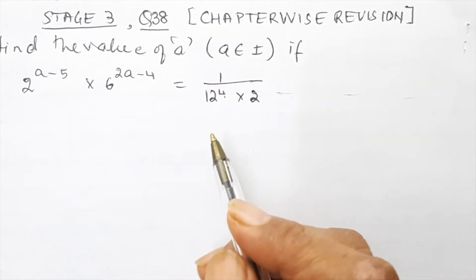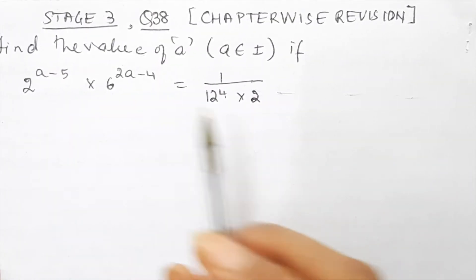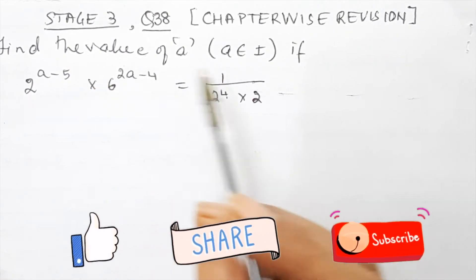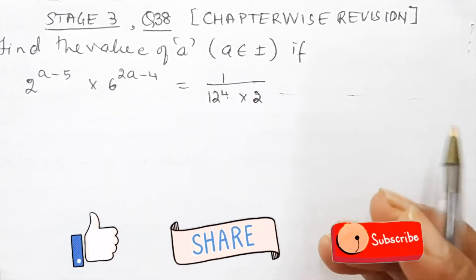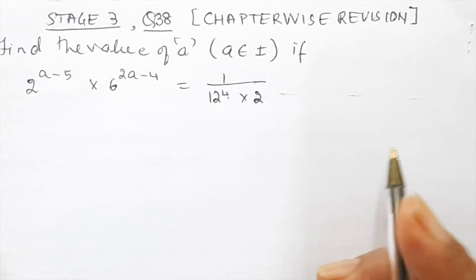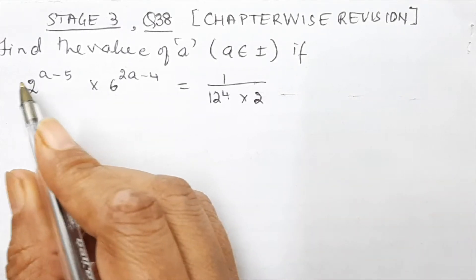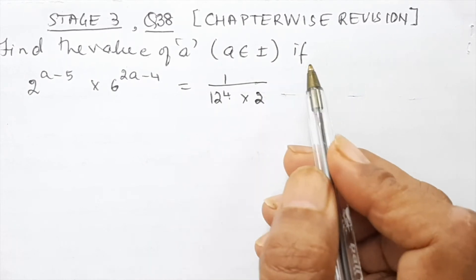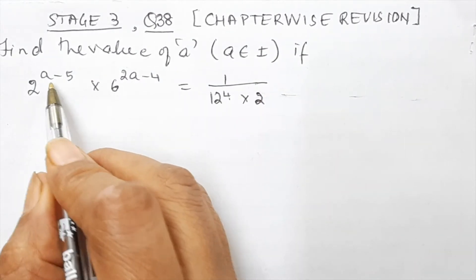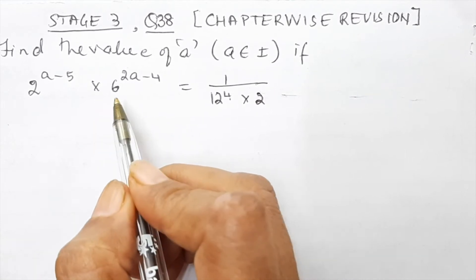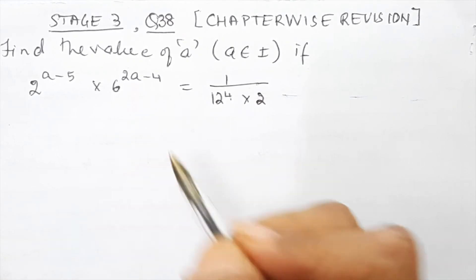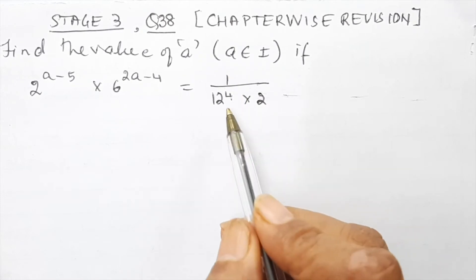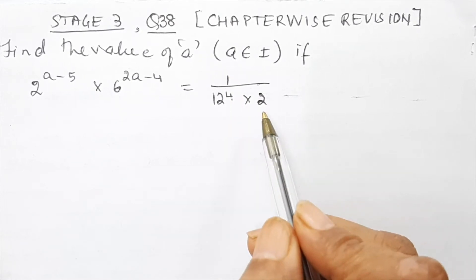Hi, my class 9 friends. This is a doubt from Chapter Wise Revision, Stage 3, question 38 of the Concise Maths Preboards textbook for class 9. Find the value of a, where a belongs to integers, if 2 to the power (a minus 5) into 6 to the power (2a minus 4) equals 1 upon 12 to the power 4 into 2.